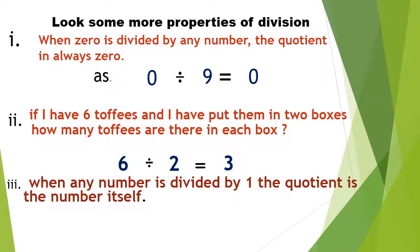Third property: when any number is divided by 1, the quotient is the number itself. Look, 6 divided by 1 equals 6.